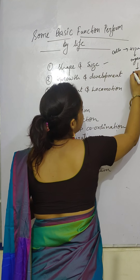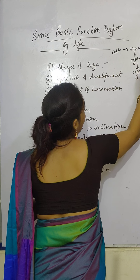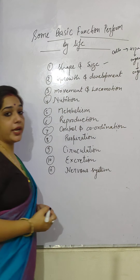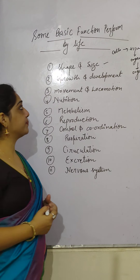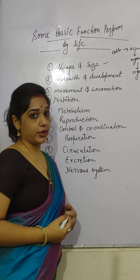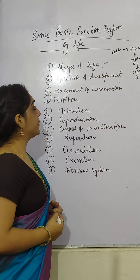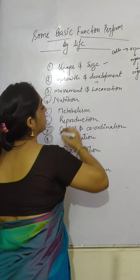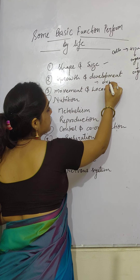An organ system forms an organism. Next is growth and development — how an organism performs growth and development. Basically, in growth and development, the organism increases its mass.